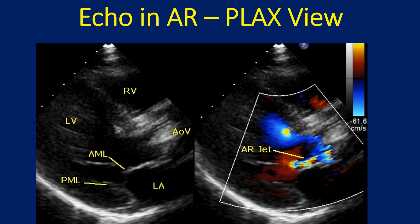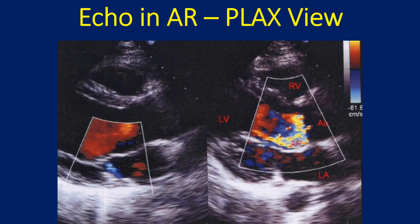This parasternal long axis view from another case shows the aortic valve as grossly thickened and calcified. The right panel shows the multicolored jet of aortic regurgitation along the ventricular surface of the anterior mitral leaflet. This is quite an eccentric AR jet, making severity assessment difficult. Another eccentric jet of aortic regurgitation is seen going along the posterior margin of the left ventricular outflow tract. The anterior mitral leaflet shows reverse doming as the aortic regurgitation jet strikes it. The systolic frame also shows a trivial mitral regurgitation jet into the left atrium as a bluish mosaic jet.